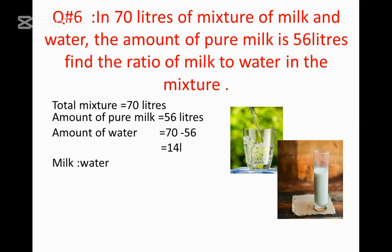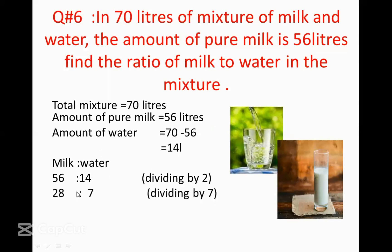Now, milk ratio water: milk is equal to 56 liters and water is equal to 14 liters. The units will be cancelled because ratio has no unit — remember, ratio has no unit. Now we reduce to lowest terms. Dividing by 2: 56 becomes 28 and 14 becomes 7. Then dividing by 7: 28 becomes 4 and 7 becomes 1. So the required ratio is 4:1.